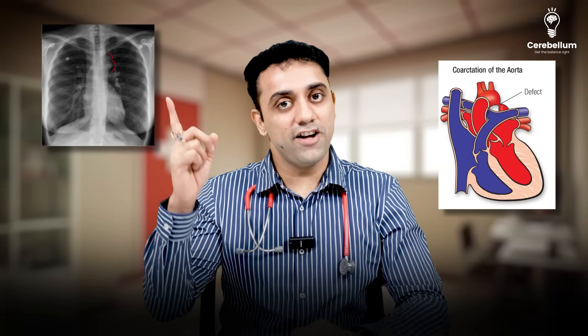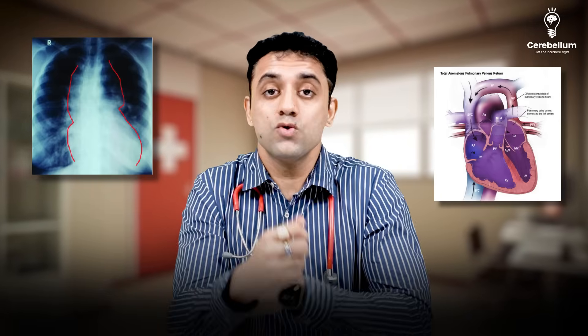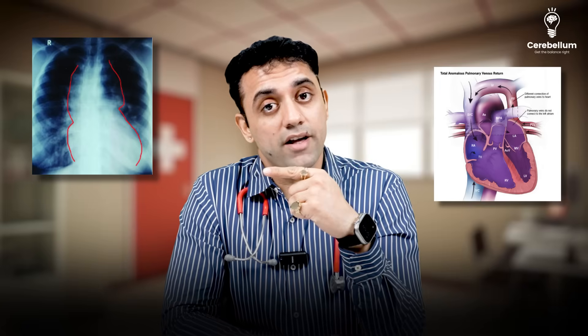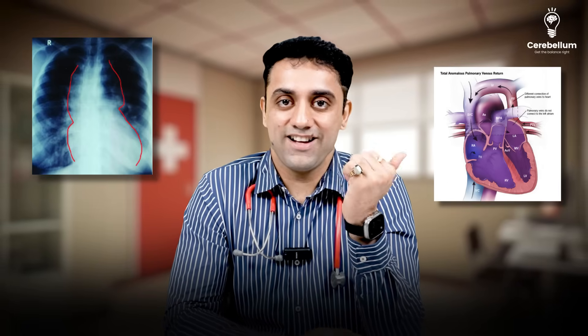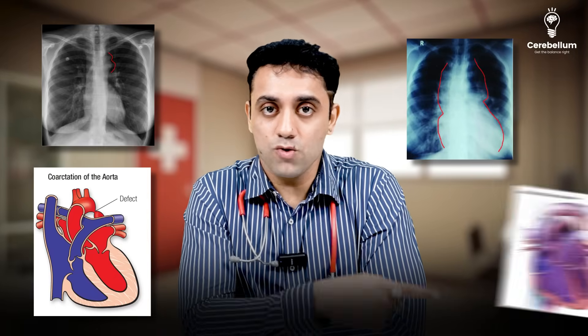Top X-rays in cardiology: boot-shaped heart is seen in tetralogy of Fallot. Box-shaped heart is seen in Ebstein anomaly. Figure of 3 appearance is seen in coarctation of aorta. Figure of 8 appearance is seen in supracardiac TAPVC — total anomalous pulmonary venous connection.